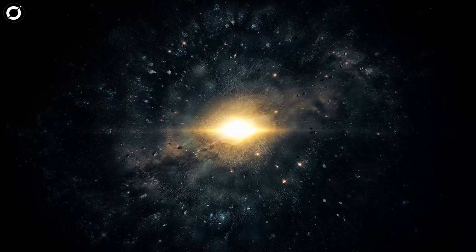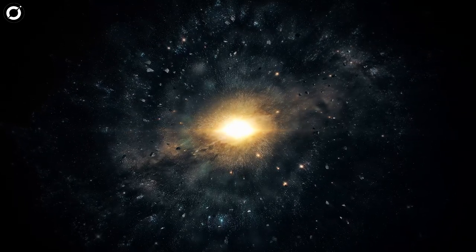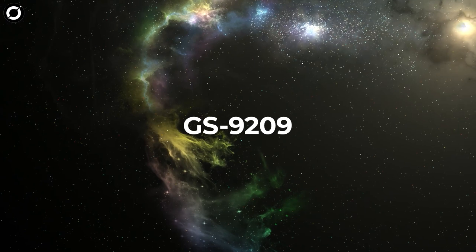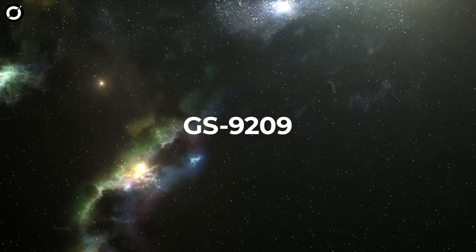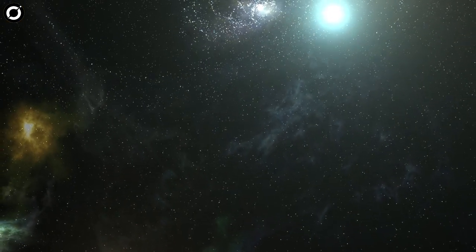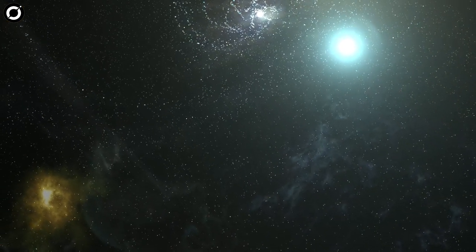Known as GS-9209, the galaxy formed around 600 to 800 million years after the Big Bang and is the earliest of its kind found to date.